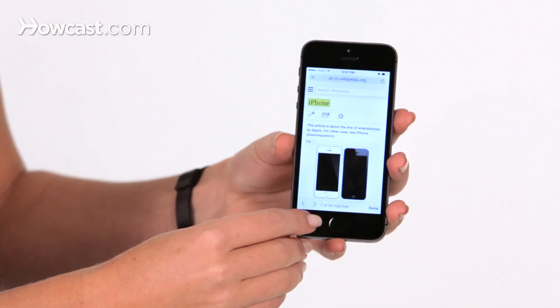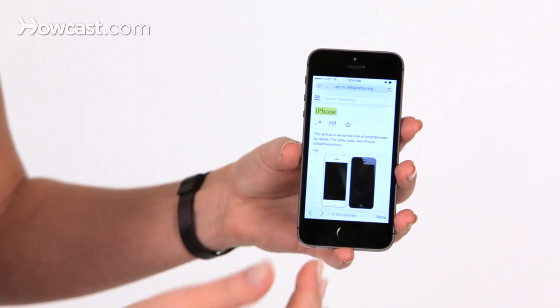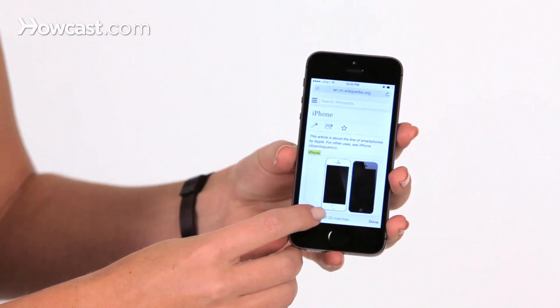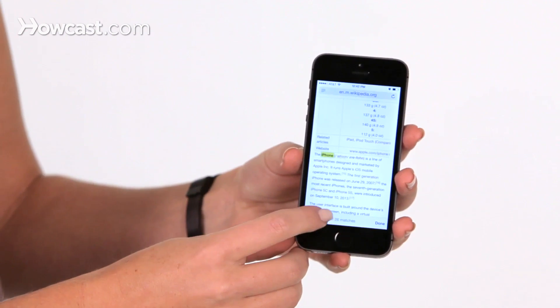At the bottom you have little arrows that will take you to the next occurrence. So you can click forward, and you can keep going through to every mention of it.